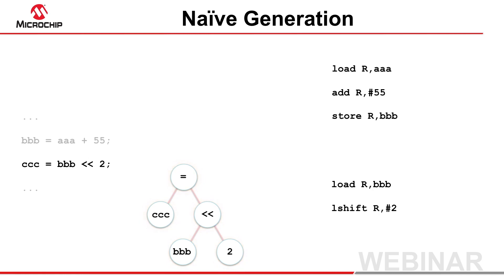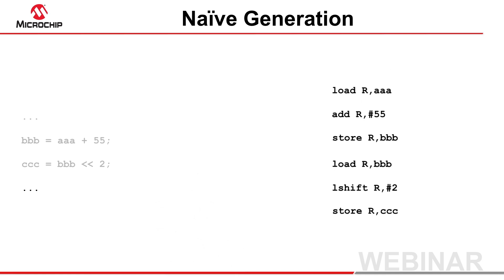Naive doesn't mean haphazard, though. The output is still optimal; it's just that when the sequences generated from different expressions come together, instructions in one might render redundant instructions in the other. As in this example, where a register was stored and then oddly reloaded with the same value immediately after. Once the output is laid out in front of you, it is easy to see what might be considered remiss, but the compiler has no reasonable way of predicting that this will occur.